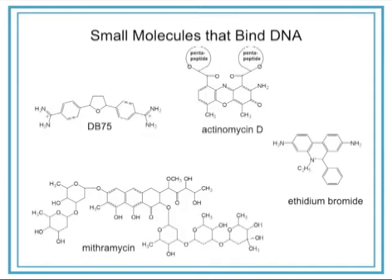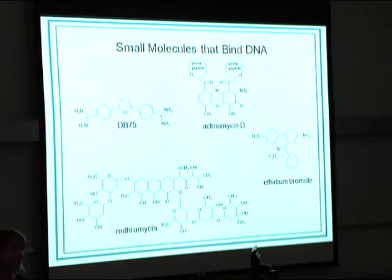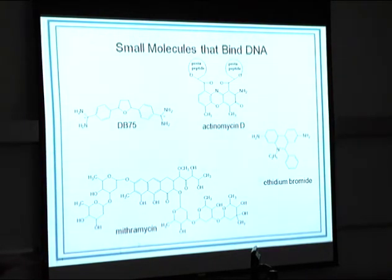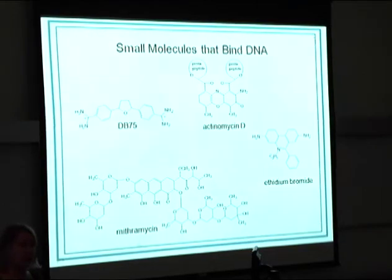We have a wonderful array of small molecules that can do the job of kicking off proteins. They have names like actinomycin, ethidium bromide, mithromycin, and DB75. Have you guys heard of ethidium bromide? We use it when running gels — it's the classic agent that binds to DNA and fluoresces so you can see your DNA. The problem is, because it intercalates between base pairs, it's a carcinogen. So we have to be careful not to develop molecules that might cause cancer themselves.